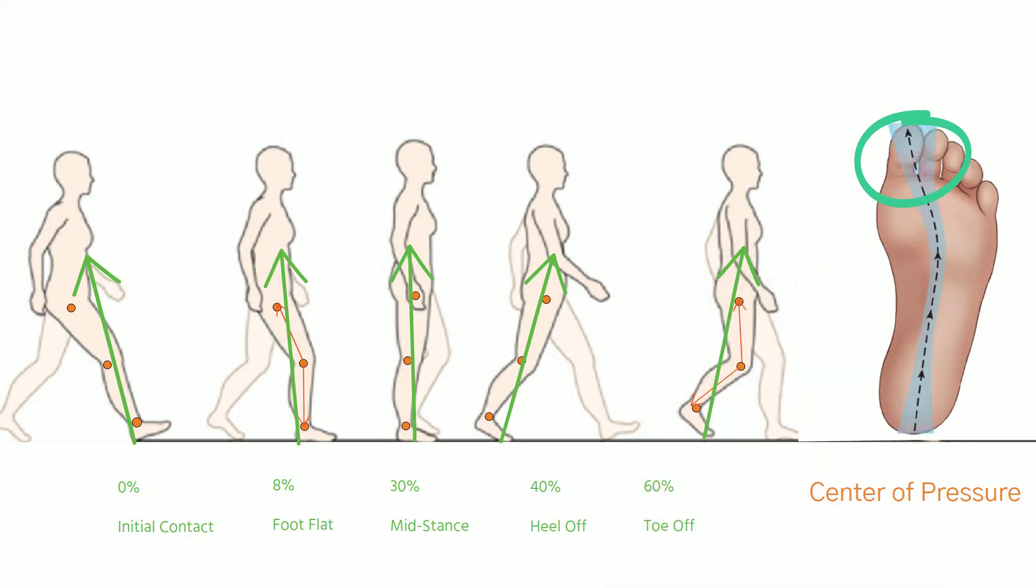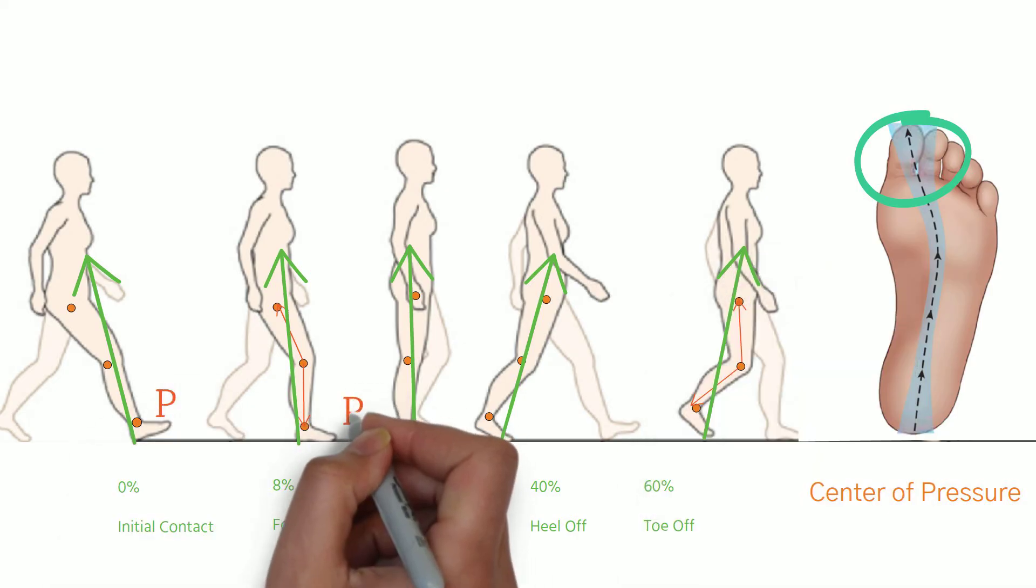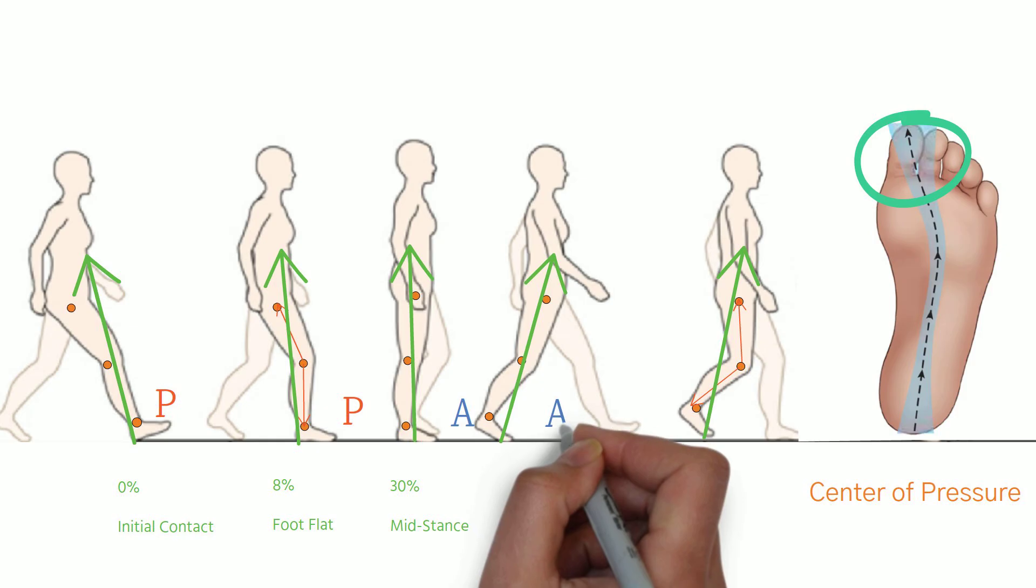Here is a quick summary. For the ankle, it's posterior, posterior, then anterior, anterior, anterior.